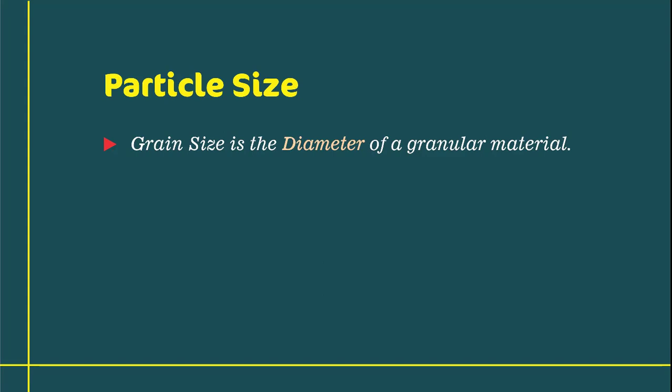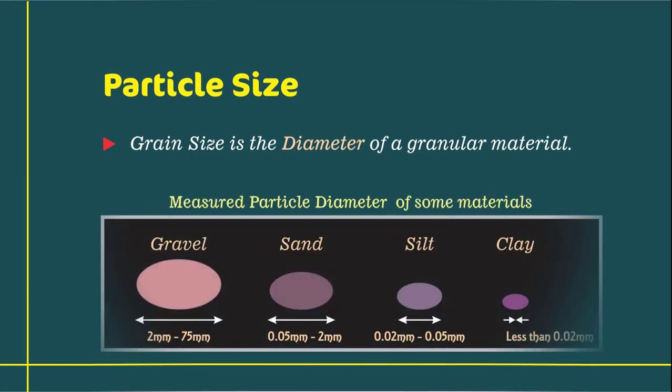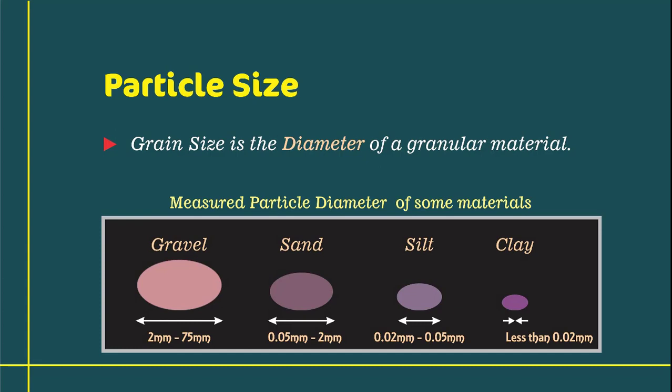With an assumption that solid particles are spherical in shapes, the particles are discretely defined by specifying their diameter. For instance, gravel has a diameter ranging between 2mm and 75mm.